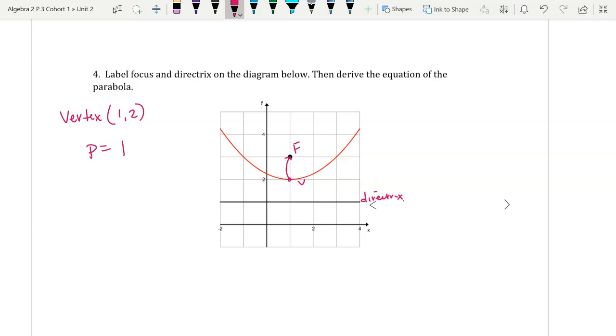So we can say y equals 1/4, four times one is four, (x - 1)² + 2. There's your equation.